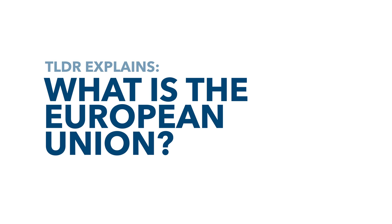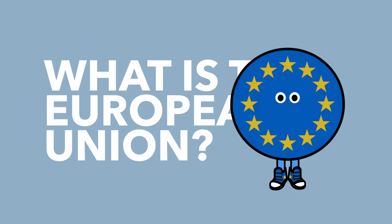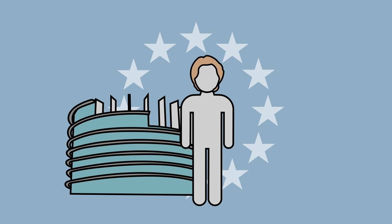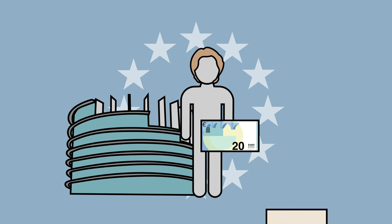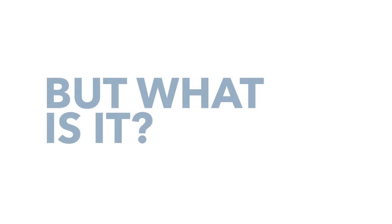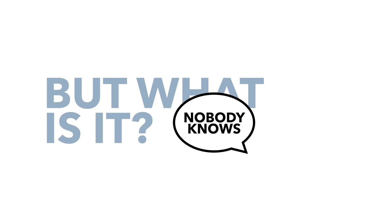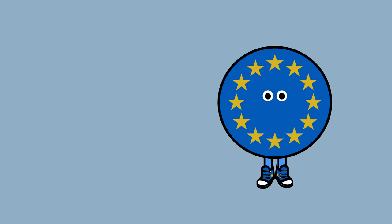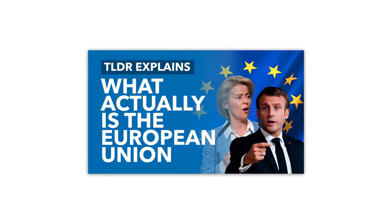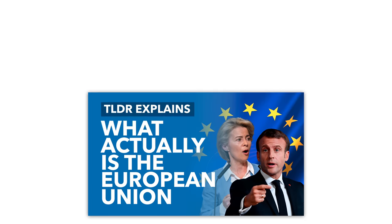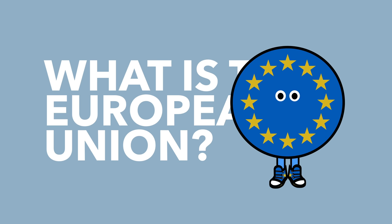What is the EU? Surely such a simple question has an equally simple answer. Yes, it's that thing that the UK is leaving, that has a flag, a parliament, presidents, its own currency, that makes laws that govern trade across a whole continent. But what is it? The short answer is that nobody knows, because there's no single answer to what is the EU. In this series, we plan to explain the EU in simple terms, and in this video we're going to give you an overview, attempting to answer the question: what is the EU?